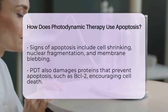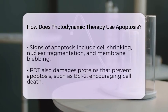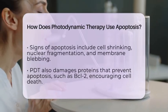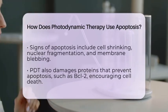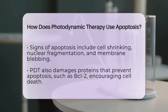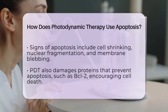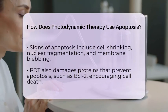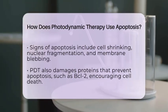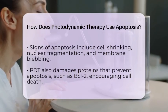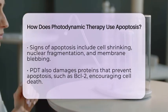PDT also damages proteins that prevent apoptosis, such as BCL2, tipping the balance toward cell death. Sometimes the stress caused by PDT also affects the endoplasmic reticulum, further promoting apoptosis through stress signaling pathways.